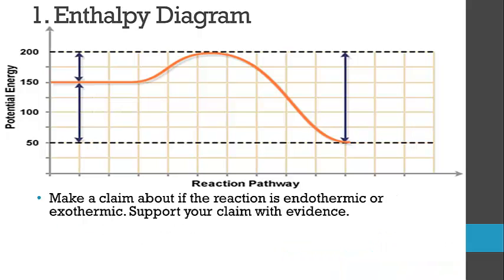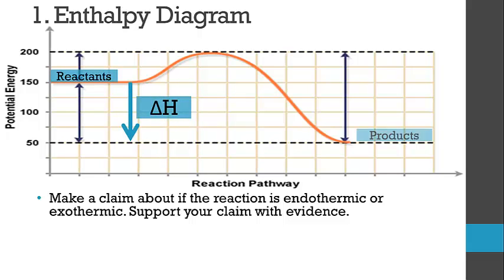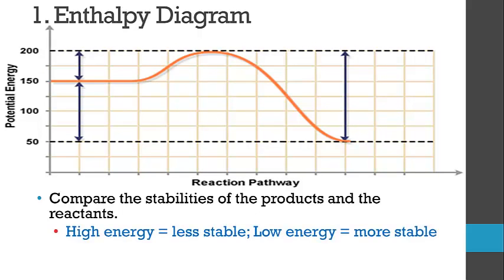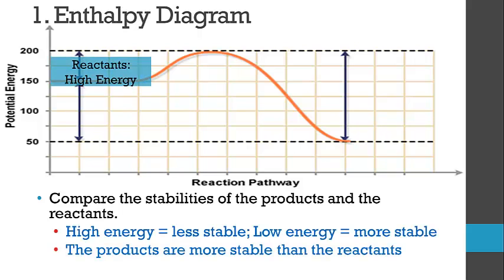So is this endothermic or exothermic? We started with reactants and then decreased in enthalpy to the products, so this reaction is exothermic. The products have lower enthalpy than the reactants, meaning heat is released — which is why we apply a negative value to delta H. We would see the opposite for an endothermic reaction, where the reactants would be lower in energy than the products. Regarding stability: high energy tends to be less stable and low energy tends to be more stable, so the products are more stable than the reactants because they are lower energy.